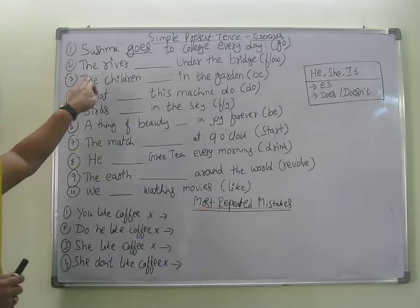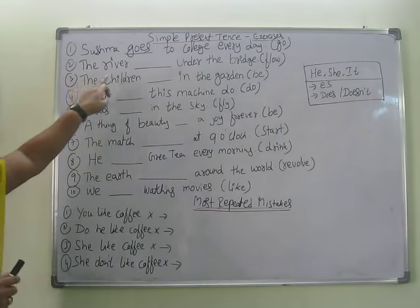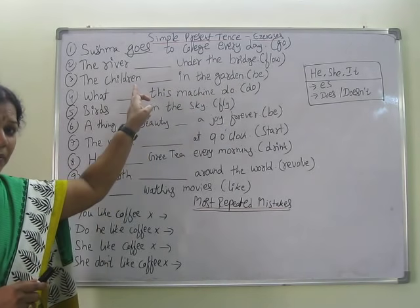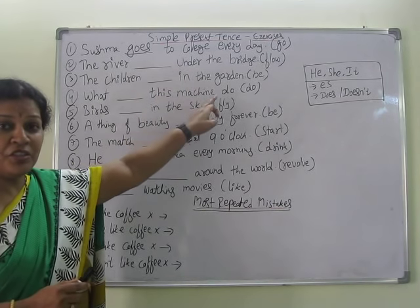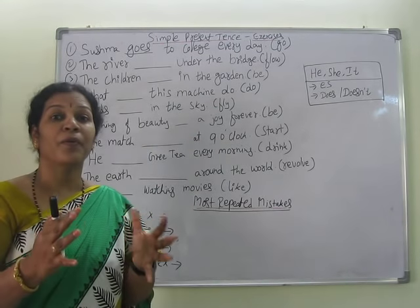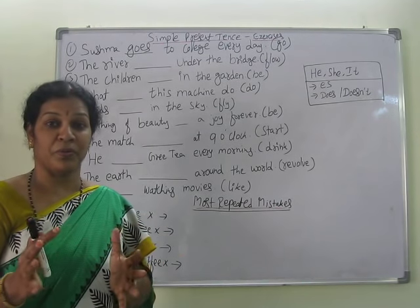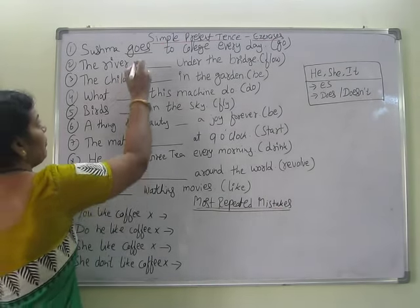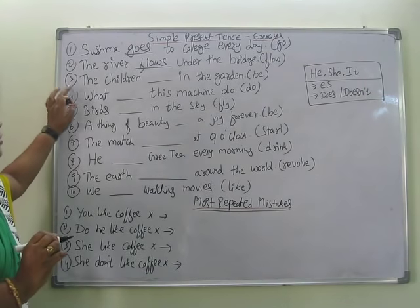Next one: The river ___ under the bridge. 'Flow' is given. Do we say 'the river flow under the bridge' or what? The river flows. So we fill in the blank: The river flows under the bridge.